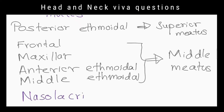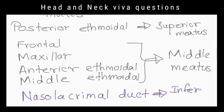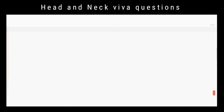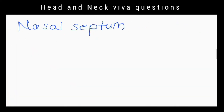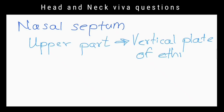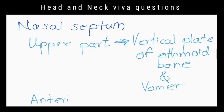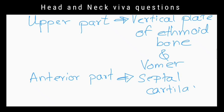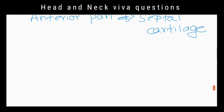What opens into the inferior meatus? The nasolacrimal duct. What structures make up the nasal septum? The upper part of the nasal septum is made up of the vertical plate of the ethmoid bone and the vomer bone. The anterior part is formed by the septal cartilage.